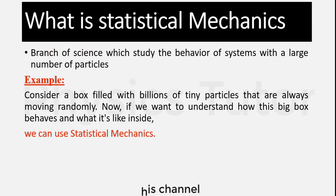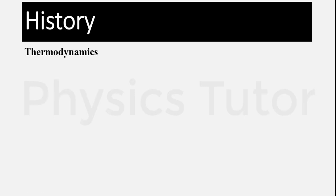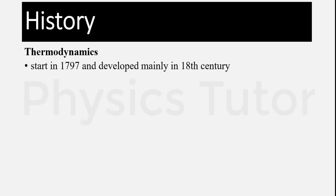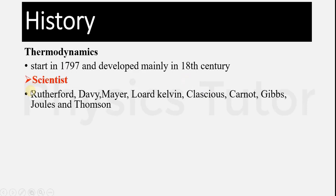Going back into the history of statistical mechanics, it starts from thermodynamics in 1797 and was further developed in the 18th century. Many scientists worked on it; few of them are Rutherford, Kelvin, Gibbs, Joules, and Thomas.